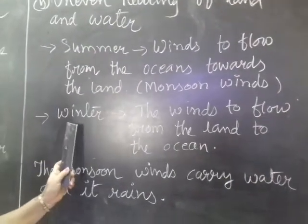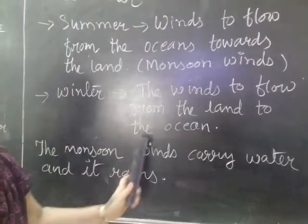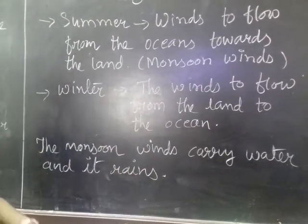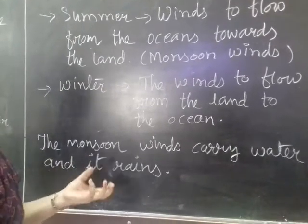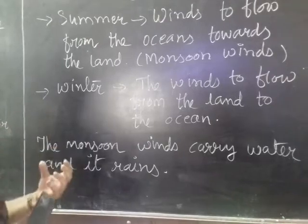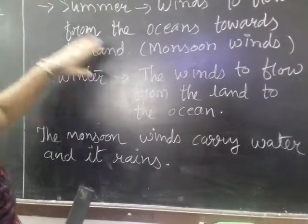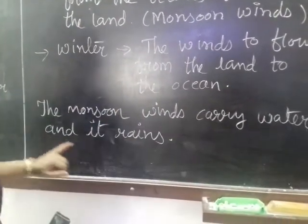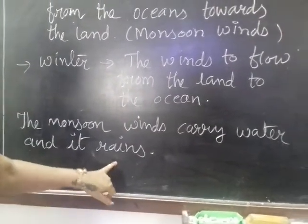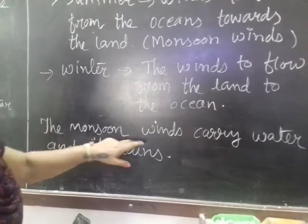On the other side, during the winter, the winds flow from the land to the ocean. That means during the winter, sea water is comparatively high temperature, so wind flows from land to sea. But here, when monsoon winds come, the monsoon winds carry water and bring rain. So monsoon winds bring water and it brings rain.